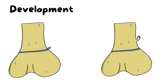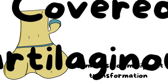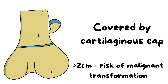It is suggested that osteochondroma arises from the growth plate, and it grows away from the direction of the physis. It is covered by a cartilaginous cap. Importantly, this cartilaginous cap cannot be seen on X-rays, so clinically the patient will have a bigger swelling, but on X-ray the swelling looks smaller.